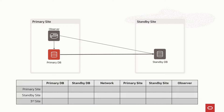We can put the observer on the primary, on the standby, or on the third side. We have to consider the different failures that we can have in a Fast Start Failover situation: a primary database failure, a standby database failure, a networking problem between the primary and the secondary site, a full primary or standby site failure, or just the observer failing.